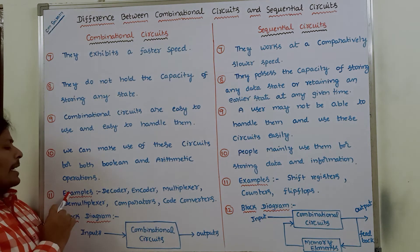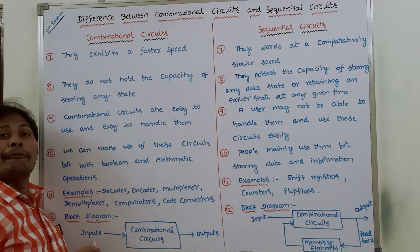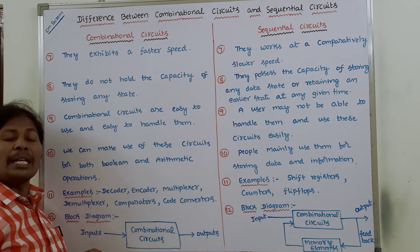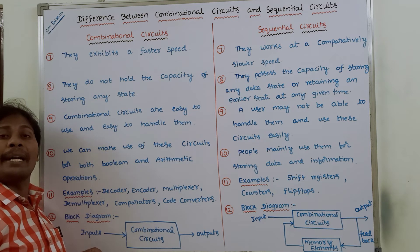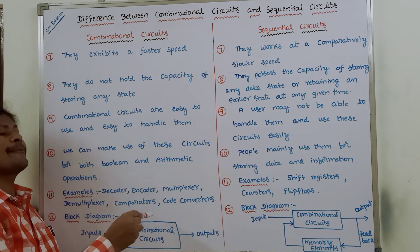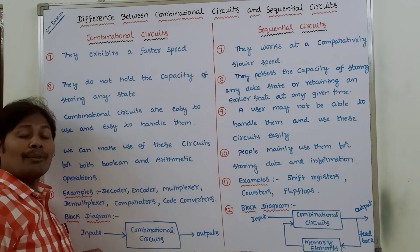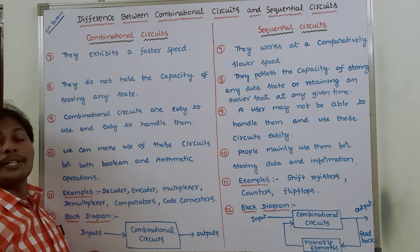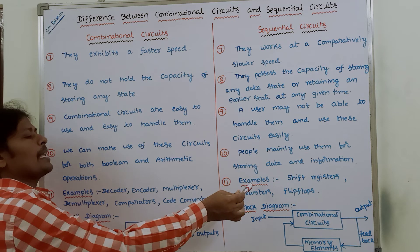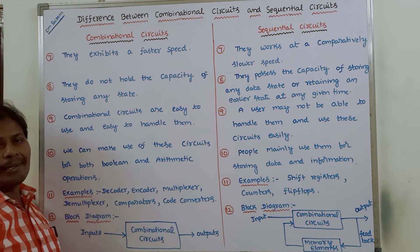The examples for combinational circuits are: half adder, full adder, decoder, encoder, multiplexer, demultiplexer, comparator, and code converters. The examples for sequential circuits are: shift registers, counters, and flip-flops.